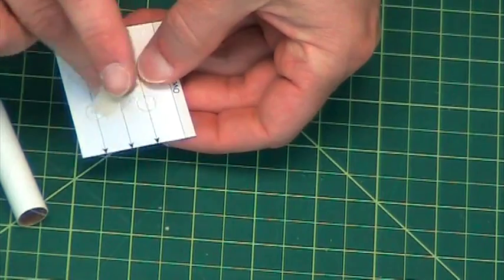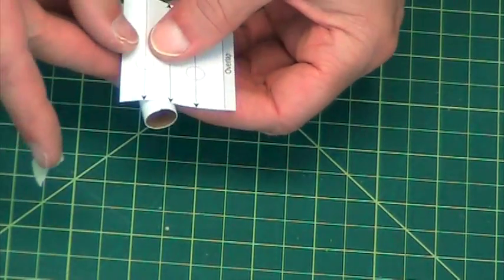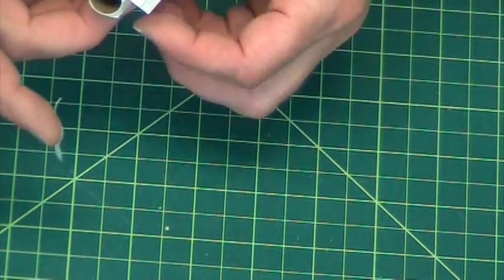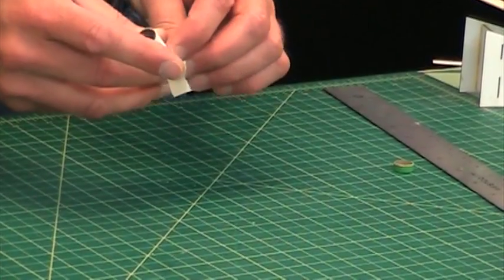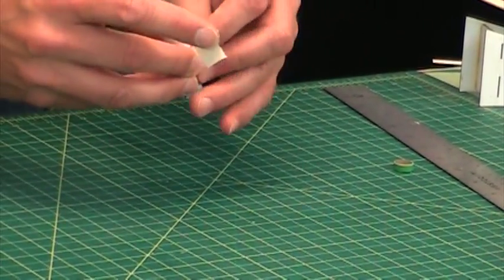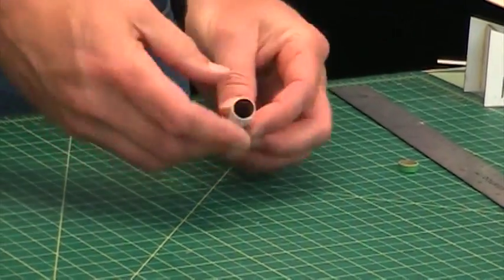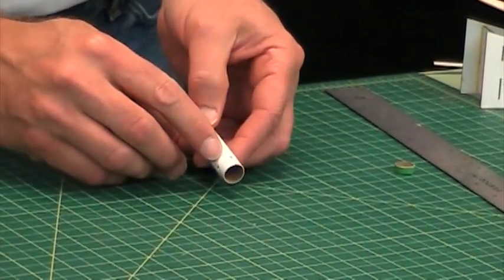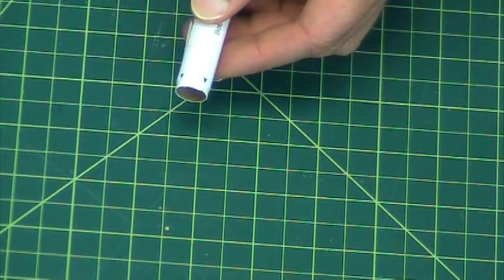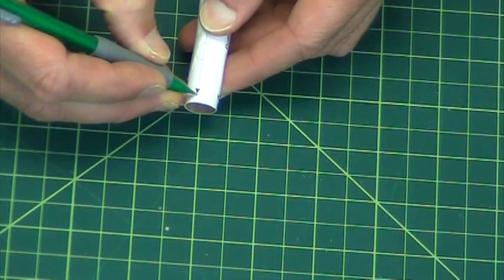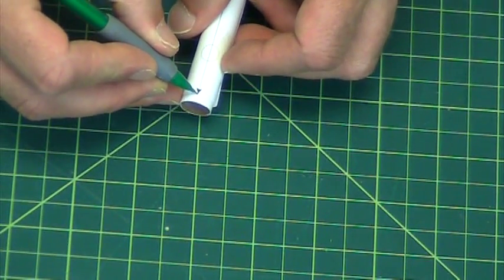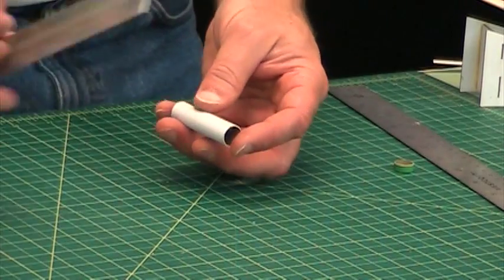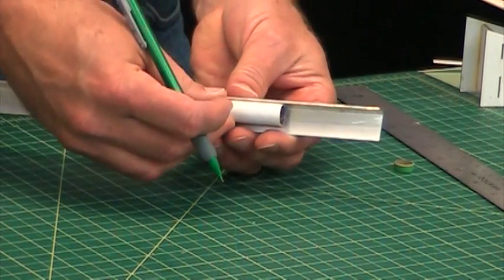You see there's going to be some holes here and those go towards the front of the tube. So I just want to wrap this around. I'm going to slide it down a little bit so that I can see my other line that I've already made and mark it. Take that off and draw two more lines.